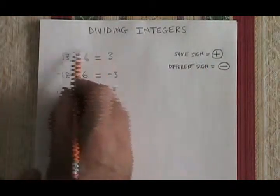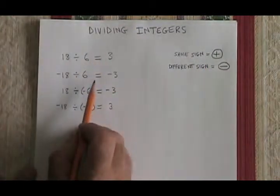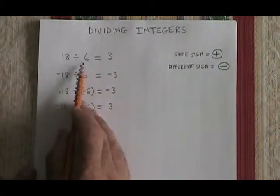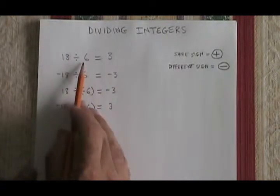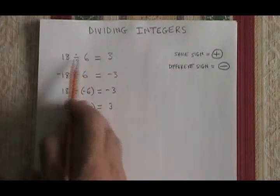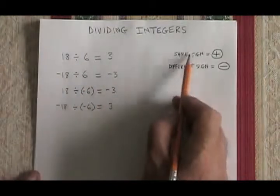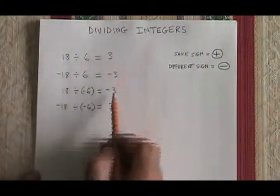It's the same rule that applied in the very first situation. If the two numbers that are being divided have the same sign, whether they're both positive or both negative, same sign equals positive, the answer will be positive.